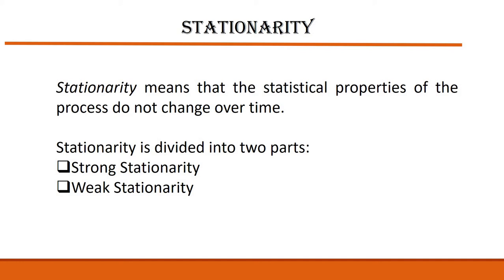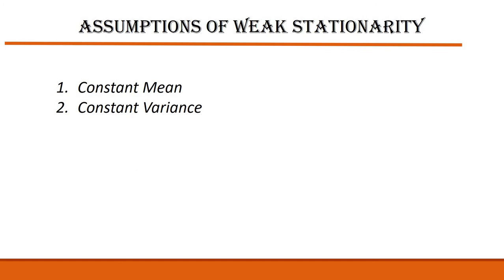Stationarity is divided into two parts: strong stationarity and weak stationarity. In time series analysis, we focus on weak stationarity only. The assumptions of weak stationarity are that there should be a constant mean across different time periods, and there should be a constant variance. When working on time series data, you should verify there is a constant mean — that is why we check stationarity. If the mean is not constant, we say the data is non-stationary or that a unit root is present. If there is a constant mean, the data is stationary.